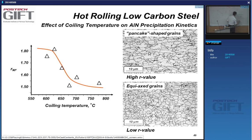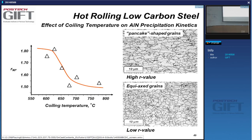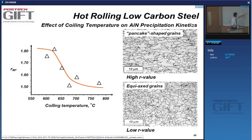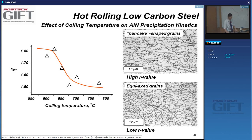Because of the impact of aluminum nitride precipitation on the selection of texture components, grains with certain texture components are favored during growth. You can see this: when you have a high R value you get typically pancaked grains, whereas if you used a high coiling temperature your grains are very equiaxed and the texture is much more random.